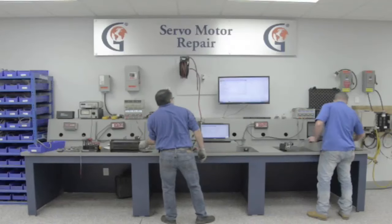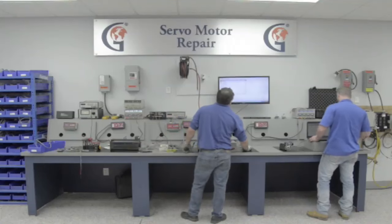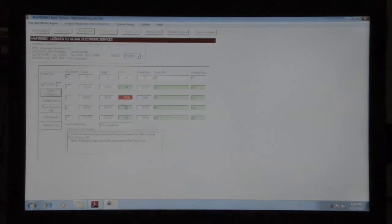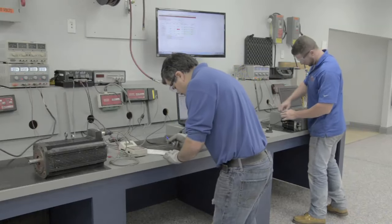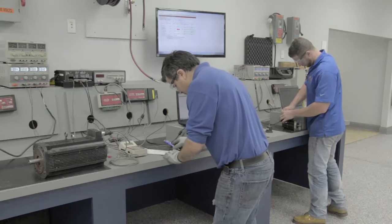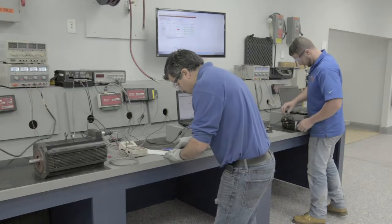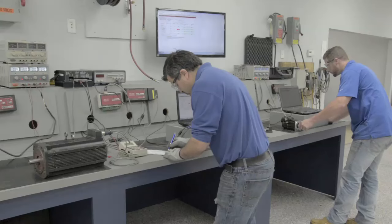This motor will need to have the encoder repaired. Since we also repair industrial electronics here in the shop just down the hall, we can get the encoder repaired right now, so it won't delay us. We can now finish up our evaluation, quote this motor, and send a sales order over to the customer for approval to move forward with this repair.